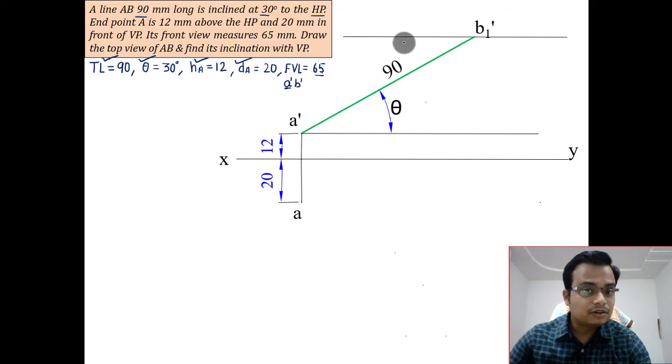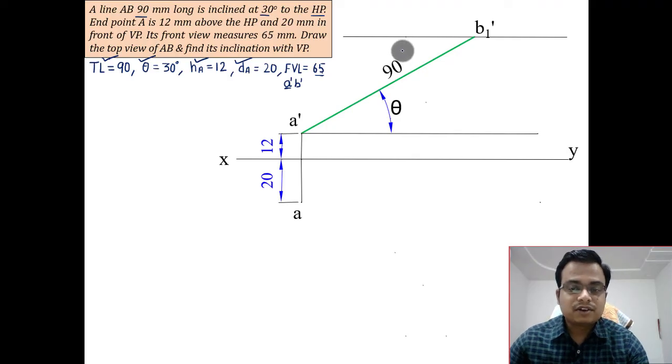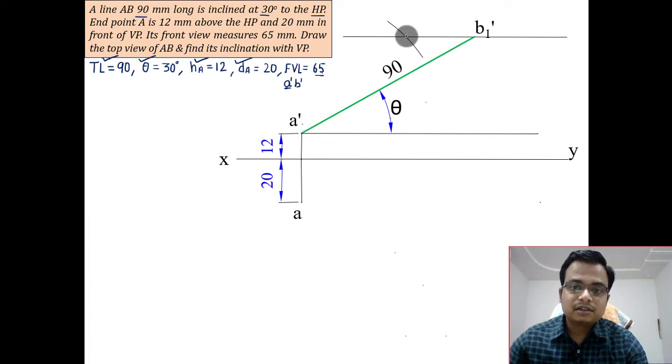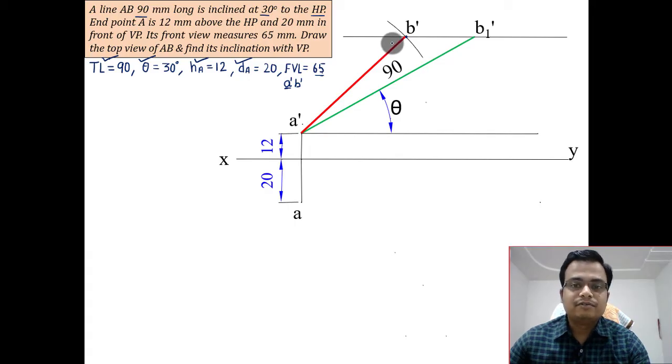So we know that the front view lies here. One end will be here, other end will be somewhere here at a distance of, well that's 65. So with a dash as center and with the radius of 65 in your compass, you can put an arc over here. With a dash as center, this precisely gives you the location of b dash, and join b dash with a dash. That's the final front view.